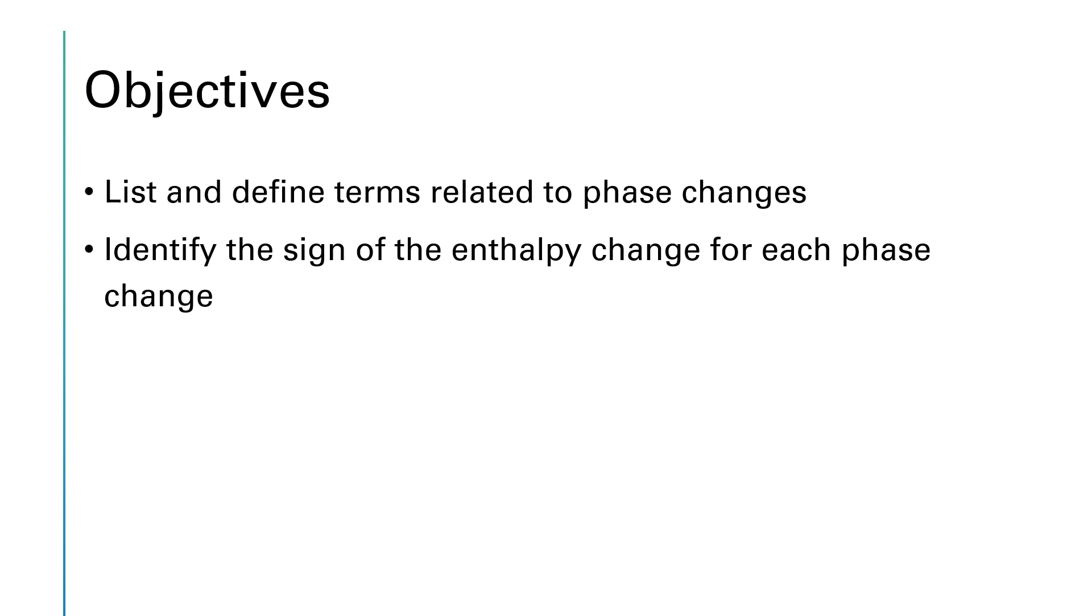Our objectives were to list and define terms related to phase changes. So that's a whole bunch of vocabulary words. There's six different phase changes and one of them has two names, fusion and melting. So make sure you know all of those terms. And then identify the sign of the enthalpy change for each phase change. You'll always get this one right if you draw solid at the bottom, liquid above that, and then gas quite a bit higher than that. And then since this is an enthalpy diagram, the higher you are on the scale, the bigger your enthalpy. And so if you move up, delta H is positive. And if you move down in this enthalpy diagram, delta H is negative. And as we'll learn at the end of the semester, entropy behaves the same way as well.